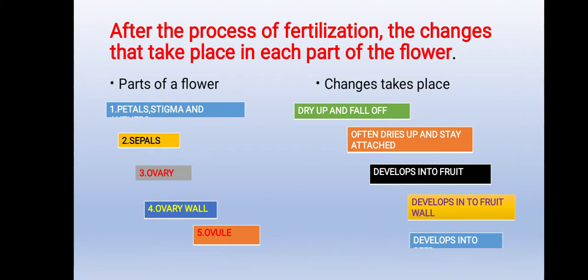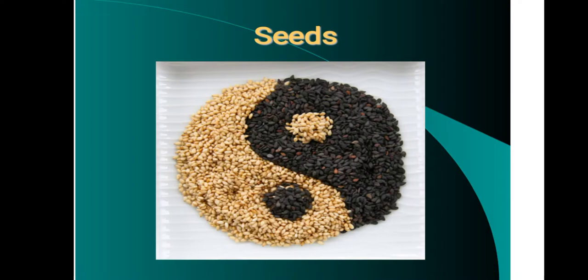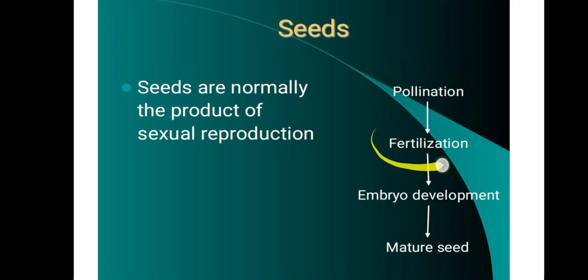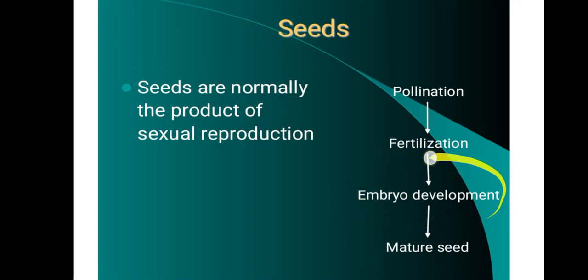Today we'll be learning about seeds. Seeds are normally the product of sexual reproduction. After the process of pollination, the next process is fertilization. During fertilization there is embryo development, and this development gives rise to a mature seed.